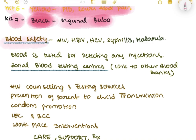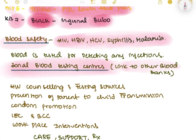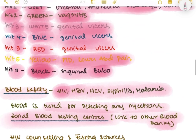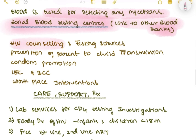Blood safety is another key strategy. Blood donations and samples are tested for HIV, HBV, HCV, syphilis, and malaria. Zonal blood testing centres link to other blood banks for population-wide screening. Additional strategies include HIV counselling and testing services, prevention of parent-to-child transmission, condom promotion, IEC and BCC (Information, Education, Communication), and workplace interventions.